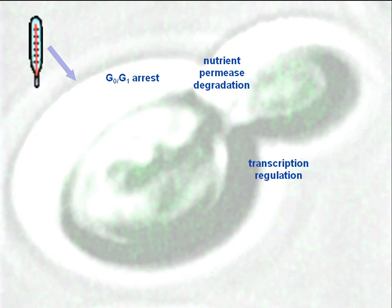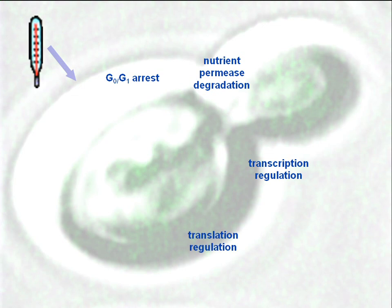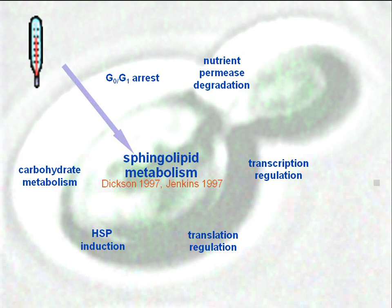And then nutrient permutation begins to degrade and stops synthesis. There is a program of transcription regulation - certain genes are turned on, certain genes are turned off. There is also translation regulation, heat shock protein induction, and metabolism changes. In 1997, two independent groups found out that all this process is dependent on the novel synthesis of sphingolipids.